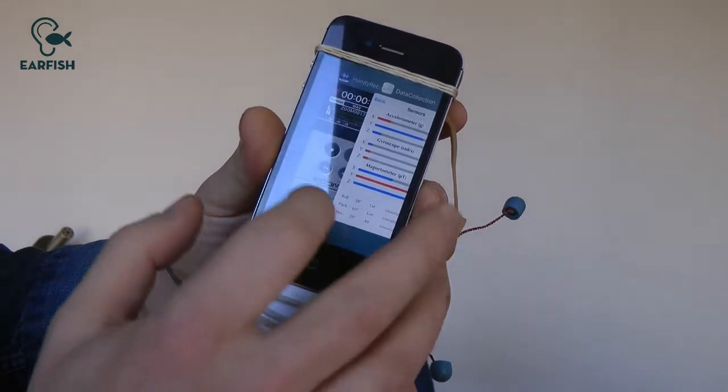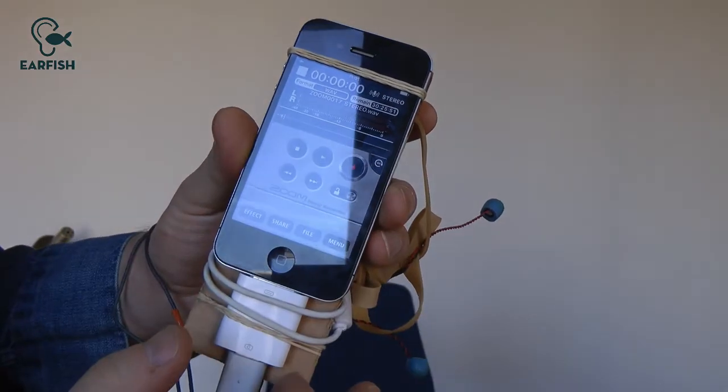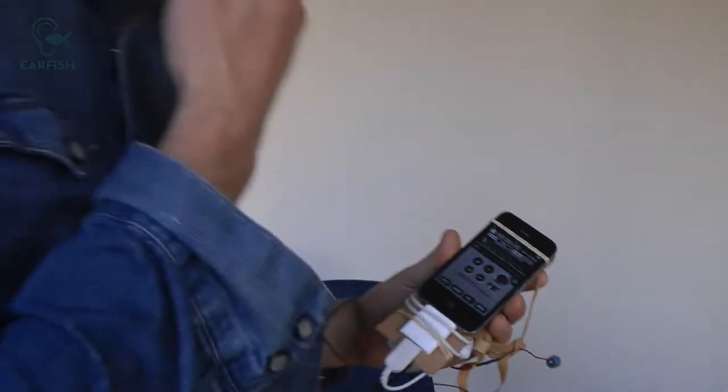Next, switch to the Zoom Handy Recorder app. Again, make sure you're still recording in stereo. Stop the recording and end the app.